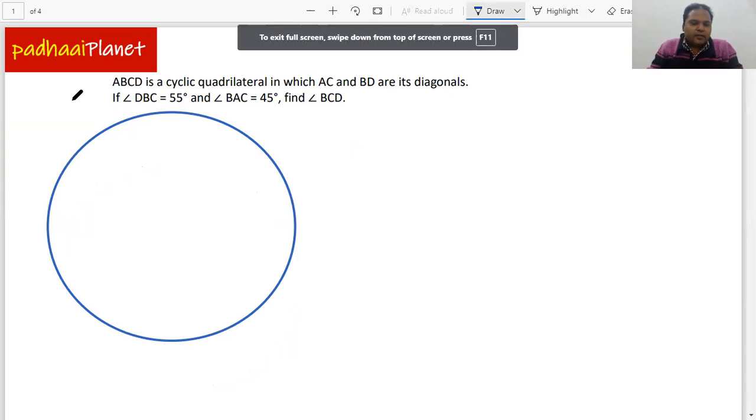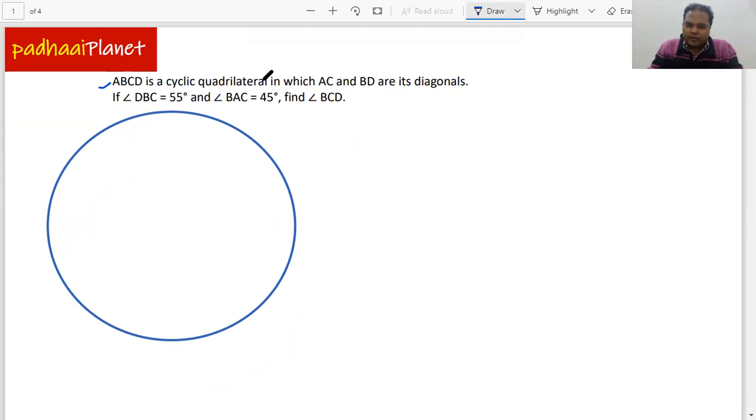It says that ABCD is a cyclic quadrilateral. So it's a cyclic quadrilateral that means all the four vertices of this quadrilateral will be lying on this circle somewhere. And there are two diagonals of this quadrilateral AC and BD. These are the diagonals and then they have also given us some angles and we need to find out the angle BCD. So as we've been doing in our earlier questions, let's first get this diagram done on the circle so that we can move ahead.